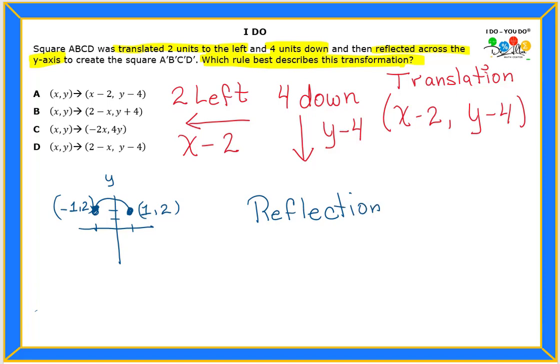So in a reflection, the y stays the same, which is y minus four. Now what's going to happen to the x? This is my x coordinate.